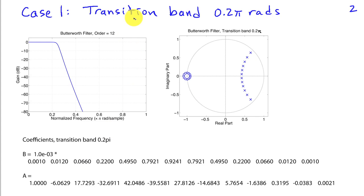So here's the first case where the transition band is 0.2π radians and our design procedure in MATLAB gives us an order 12 Butterworth filter to satisfy the specifications and indeed it does appear as if we are satisfying them.